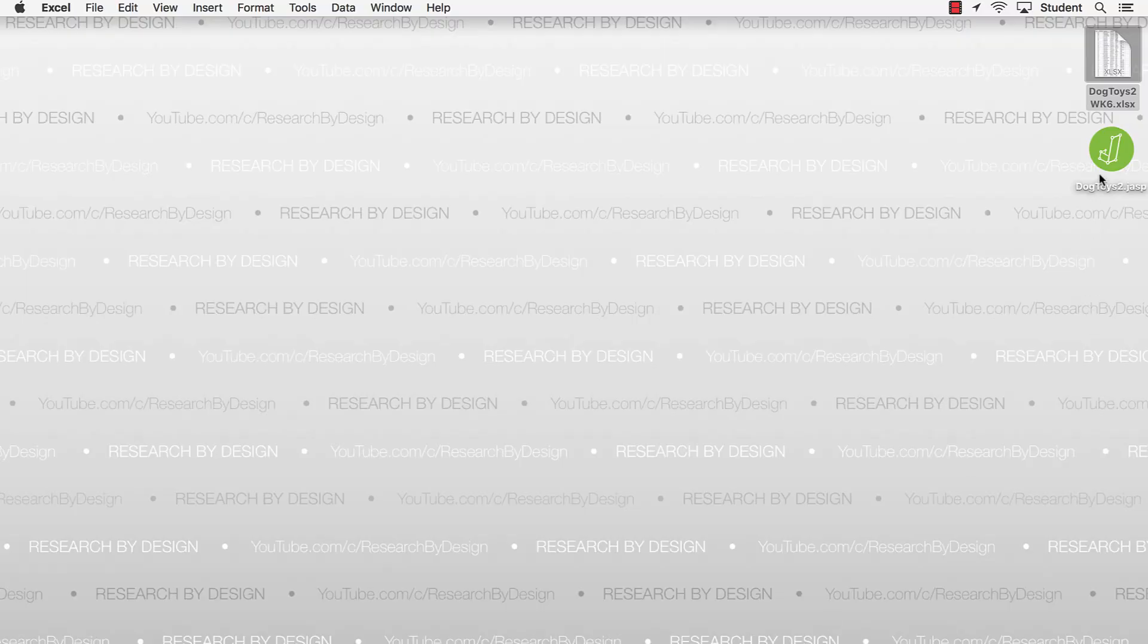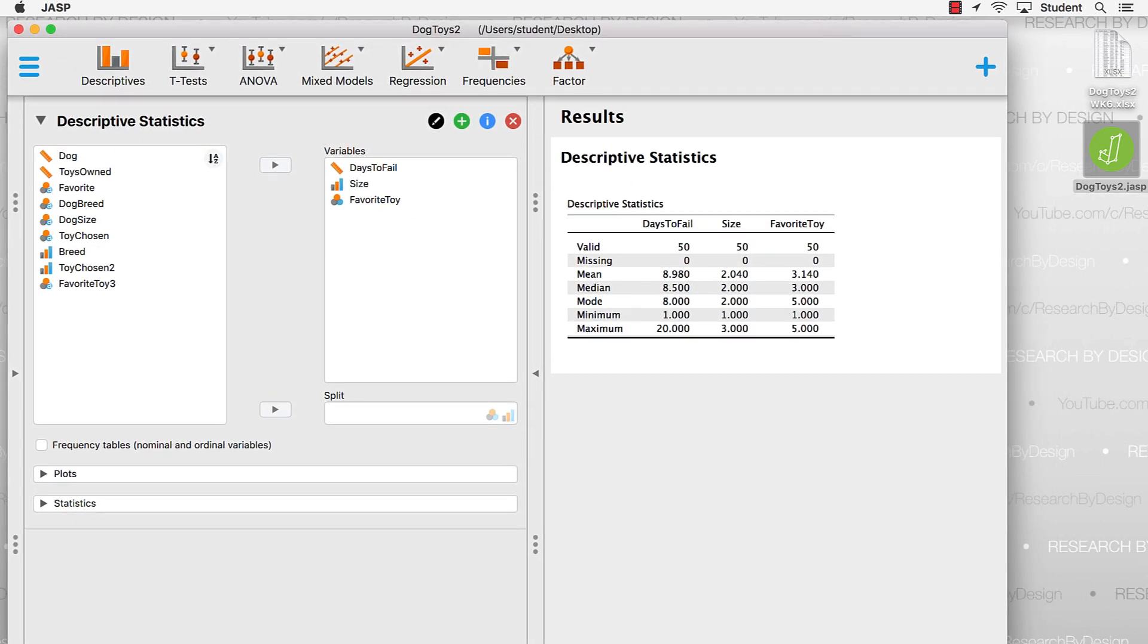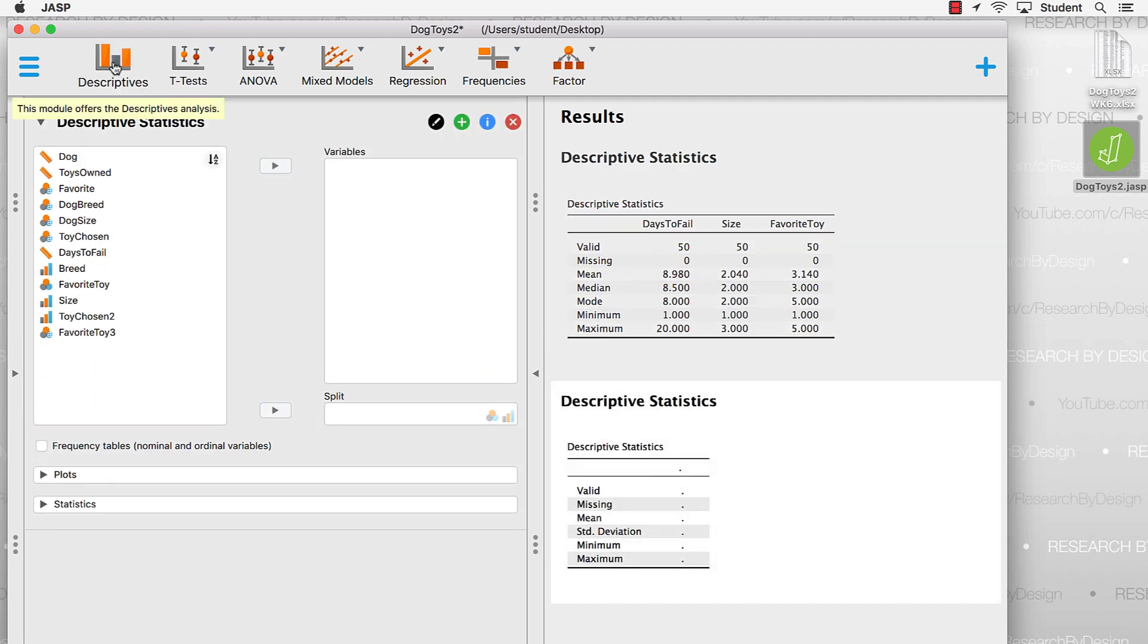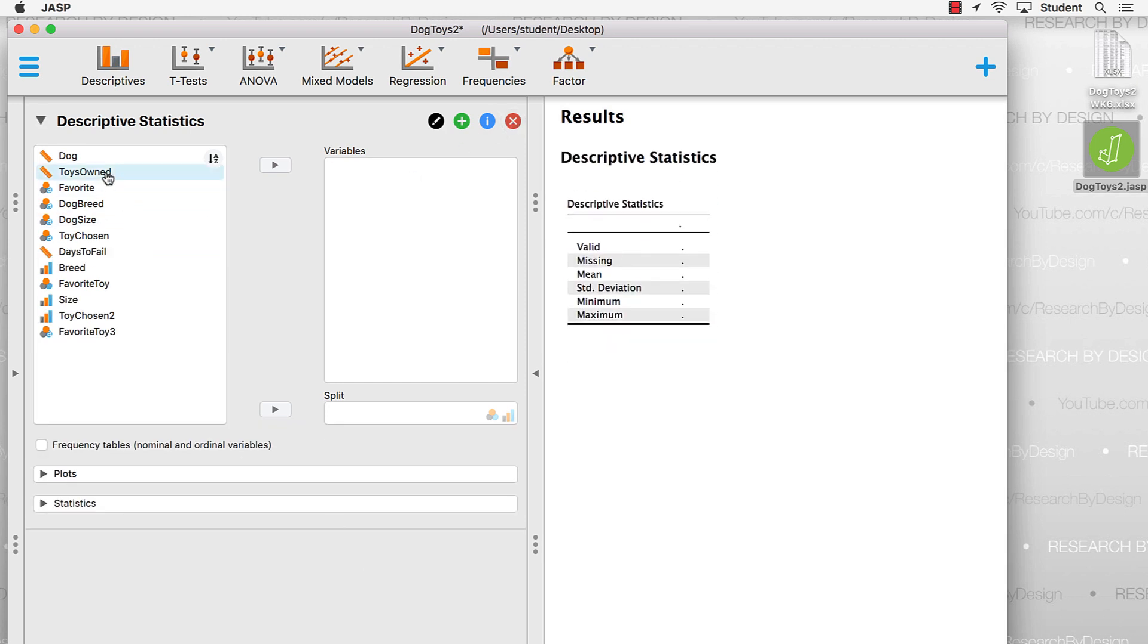And finally, let me show you how to create a five-number summary and box plots using JASP. This time, I'm going to use the Dog Toys dataset that I created and saved in the JASP format. I have it on my desktop, so I double-click to open JASP using this file. As JASP opens, all of the work that I've done previously will still be saved in this dataset. I want to do a new analysis for this example, so I'm going to start again. I'm going to begin by clicking on the Descriptives box. It opens up a brand new analysis. I'm going to be consistent and use that ToysOwned variable. Just move that into the variables box.